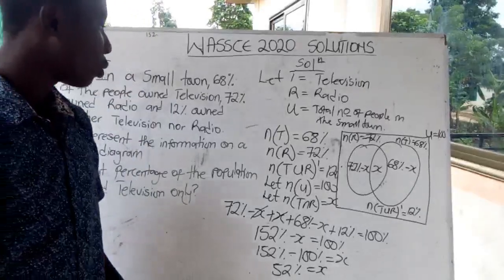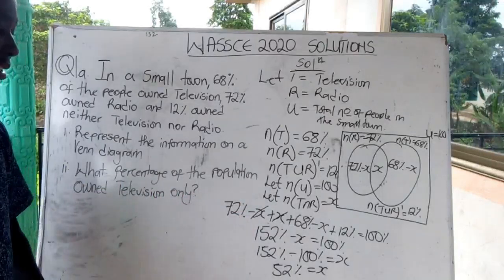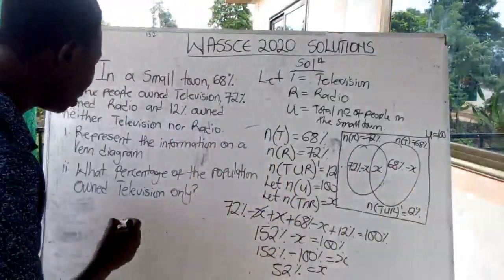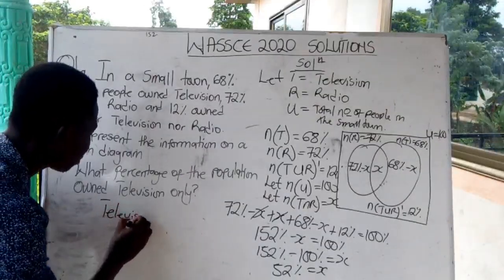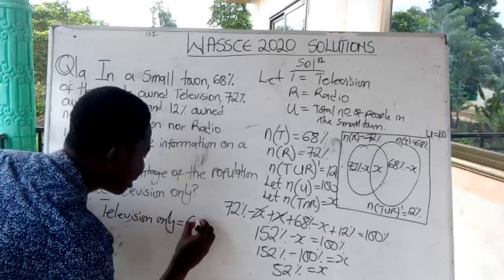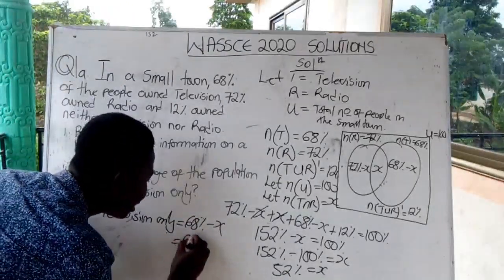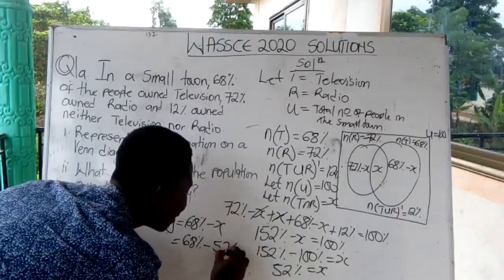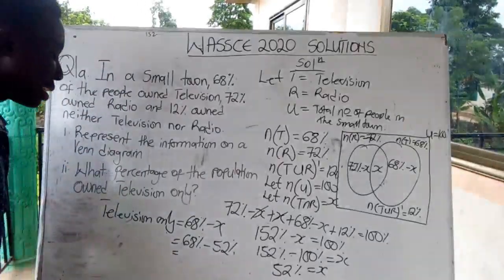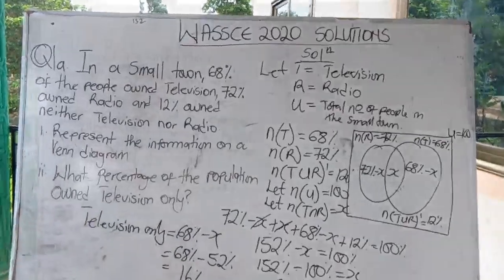Transposing, we get 152% − 100% = x, so x = 52 percent. Those who own both radio and television is 52 percent. Television only equals 68% − x = 68% − 52% = 16 percent. That is the answer for question one.